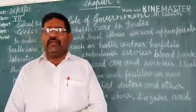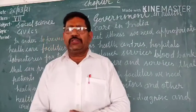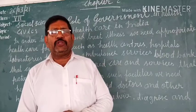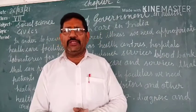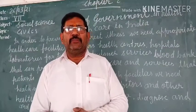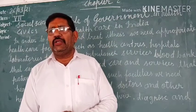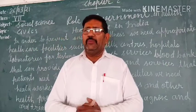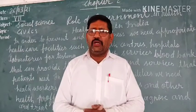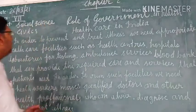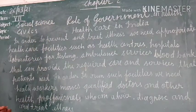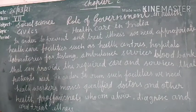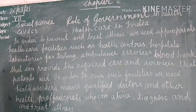For providing health facilities, health centre systems are there. For the availability of medicine, availability of doctors and nurses, and many other workers who check the blood. In order to prevent acute illness, we need appropriate health care facilities such as health centres, hospitals, laboratories for testing, ambulance services, and blood banks that provide the required care and services that patients need.